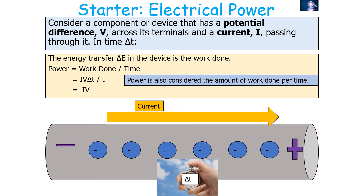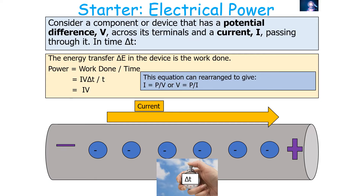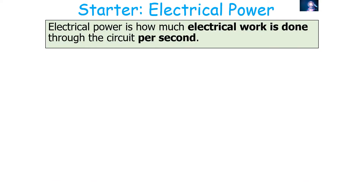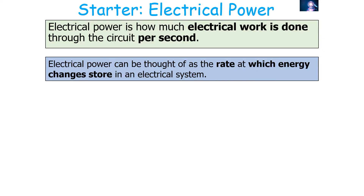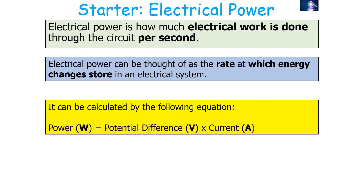Power is the amount of work done per unit time. We can rearrange this to say current equals electrical power over potential difference, or that potential difference equals electrical power over current. Electrical power is how much electrical work is done through the circuit every single second — it is the rate at which energy store changes in an electrical system. Power in watts equals potential difference in volts times current in amps.